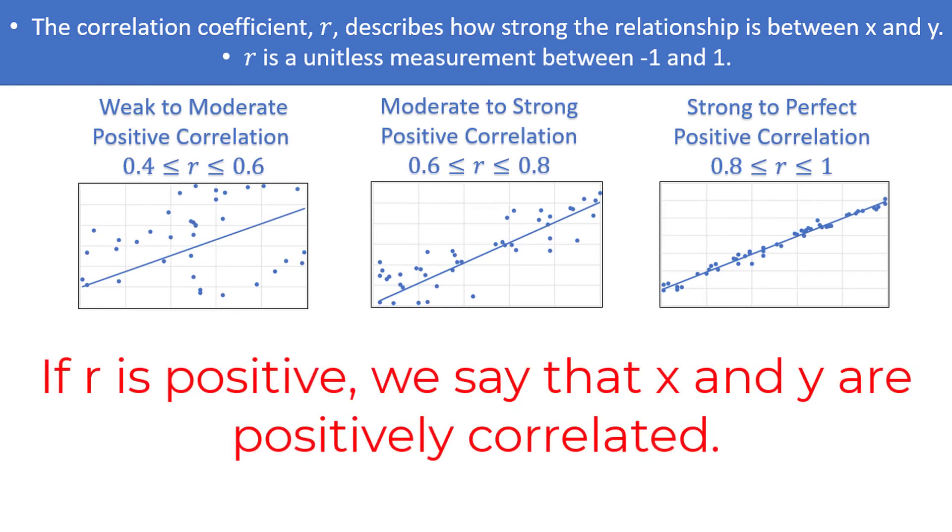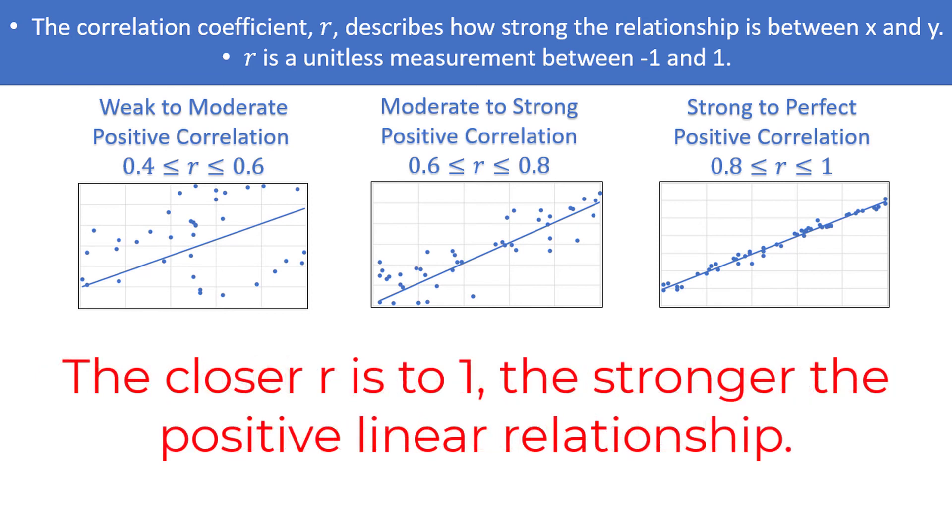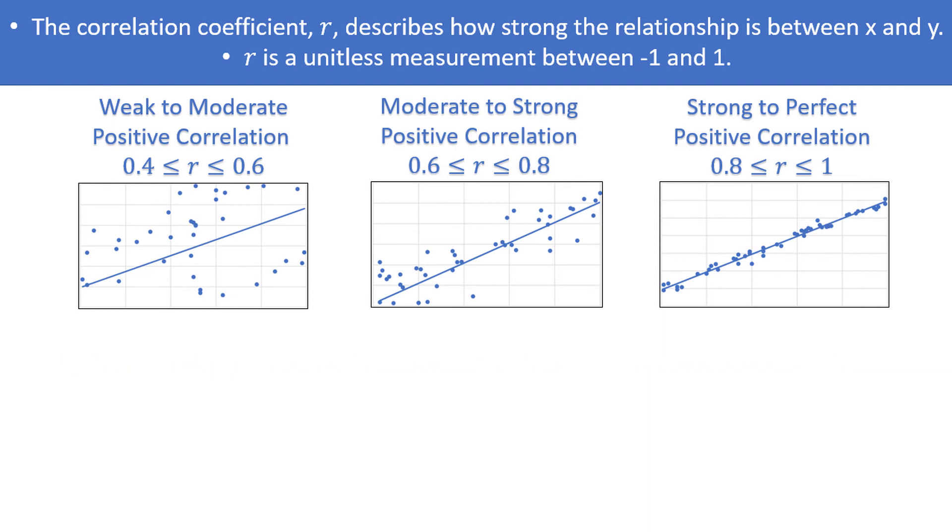If r is positive, we say that x and y are positively correlated. The closer r is to 1, the stronger the positive relationship is. For positive relationships on a scatter plot, as x increases, y tends to increase as well, which can be seen by an upward sloping least squares line.